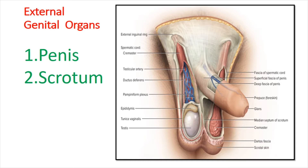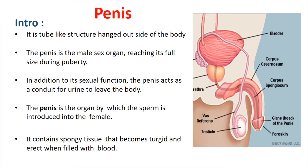Now we will see the introduction of the penis. It is a tube-like structure that hangs outside of the body. It is the male sex organ, reaching its full size during puberty. In addition to its sexual function, the penis acts as a conduit for urine to leave the body.